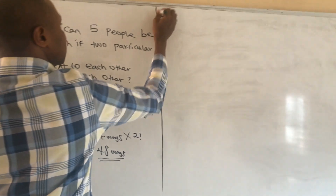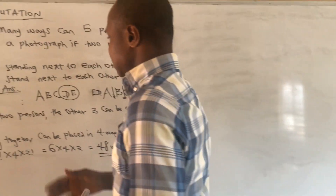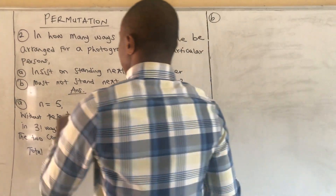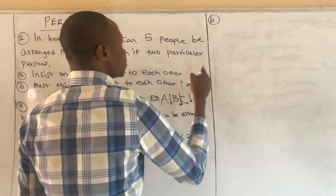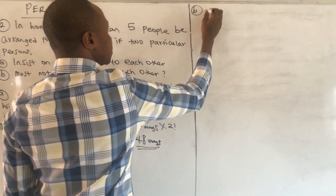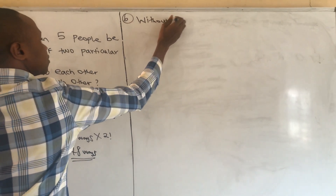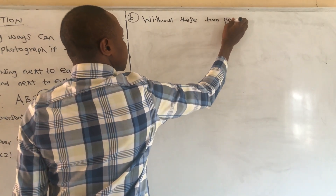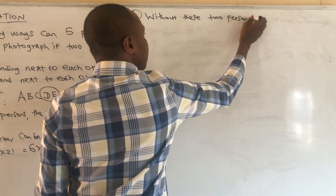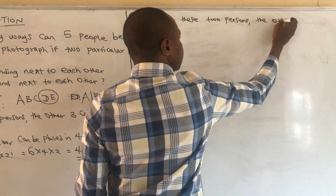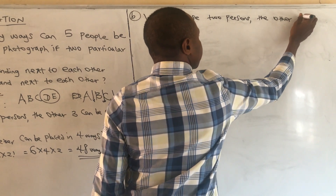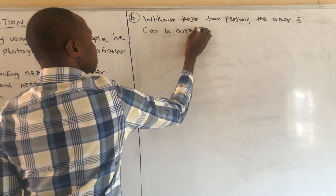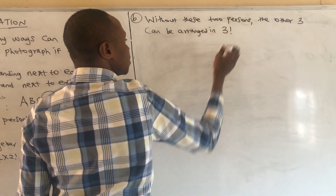Now for Part B: what if the two individuals insist on not standing next to each other? We still proceed the same way. Without these two persons, the other three can be arranged in three factorial ways.